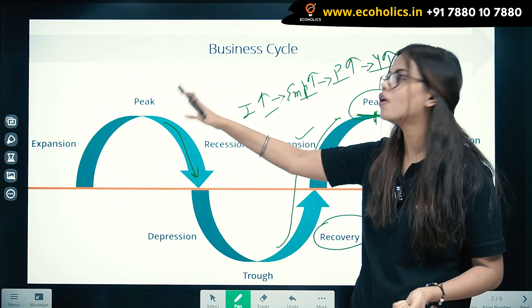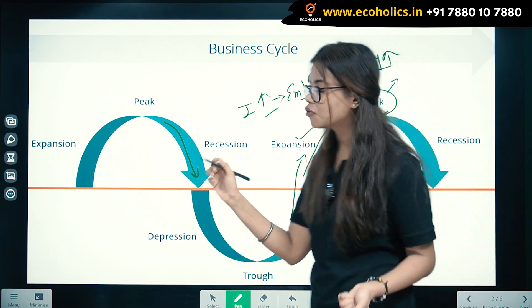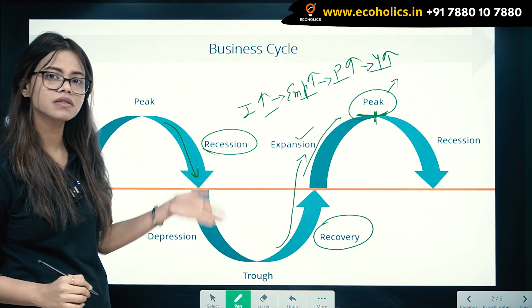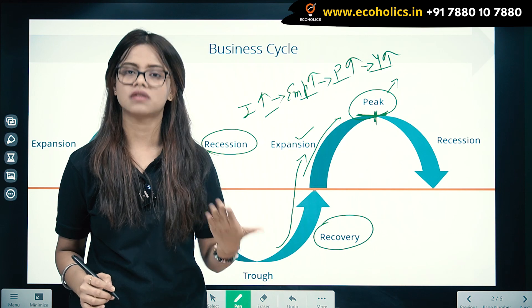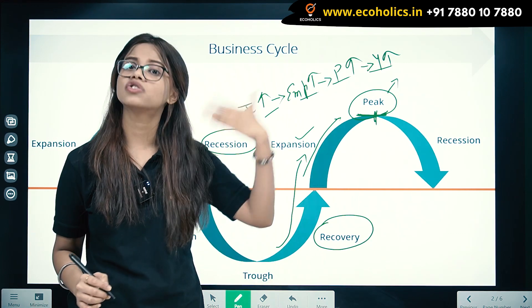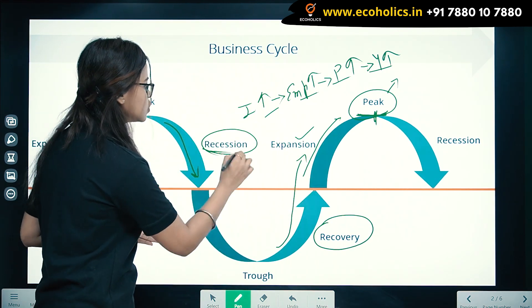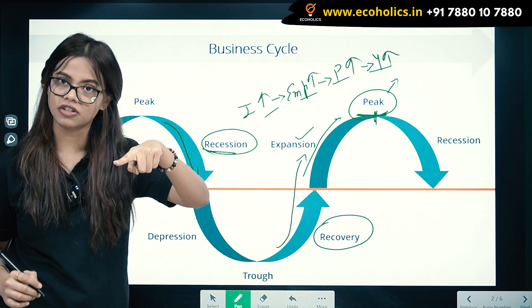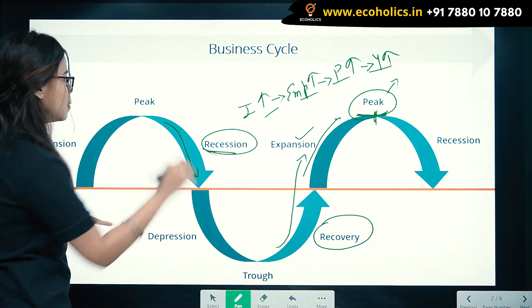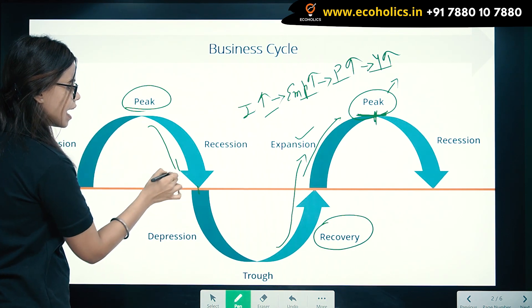When everything has reached its maximum limit, you start to fall because you cannot move beyond that point — you are bound to fall. You ultimately reach a recessive state where investors start to get pessimistic. They think that if they invest now they won't get much return or profit, so everything starts falling. This is the recessive stage and the onset of depression — first recession comes, then depression.